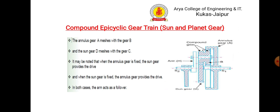The annular gear a meshes with gear b, and the sun gear d meshes with gear c. It may be noted that when the annular gear is fixed, the sun gear provides the drive, and when the sun gear is fixed, the annular gear provides the drive. In both cases the arm acts as a follower.